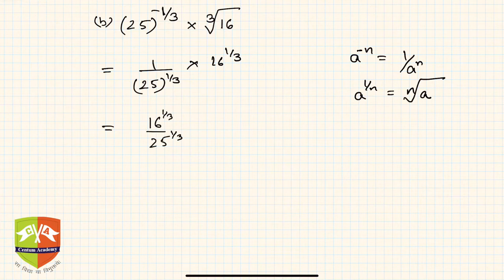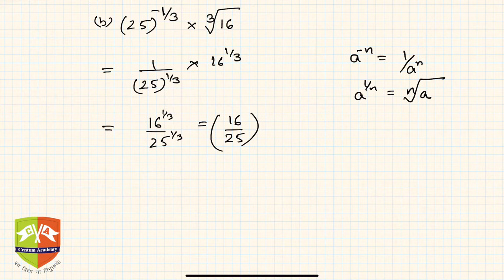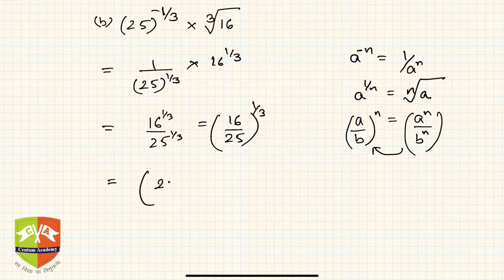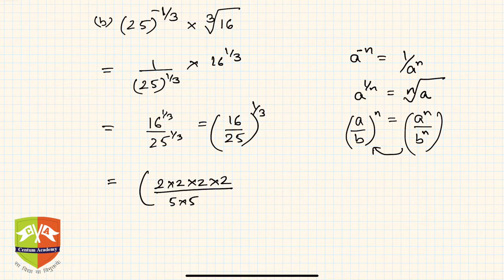So this becomes (16/25) to the power 1 by 3. Now let us write the factors: 16 can be written as 2 to the power 4, and 25 is 5 into 5, which is 5 squared. So we have (2^4 / 5^2) whole to the power 1 by 3.